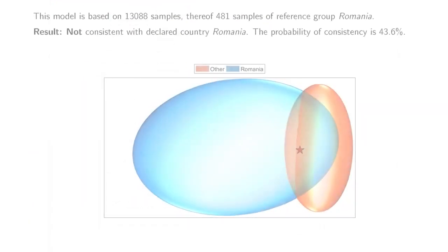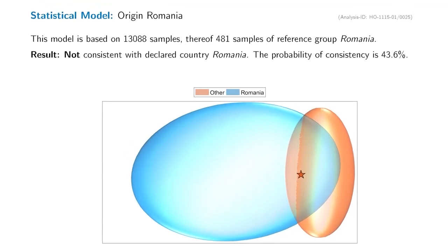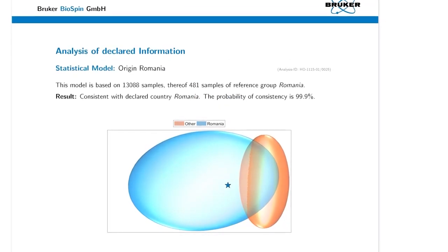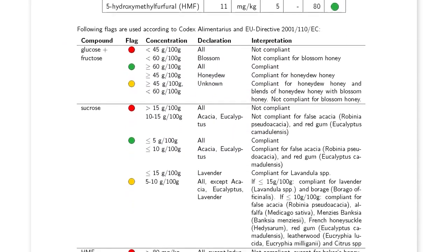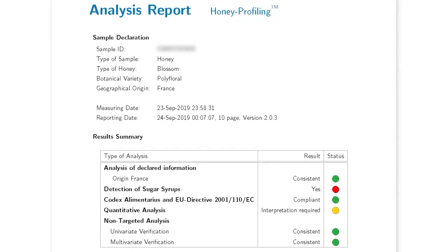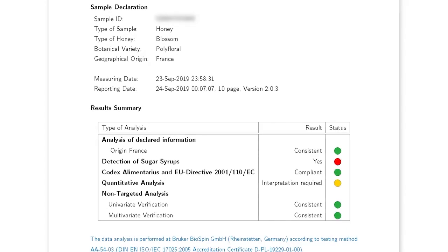The report combines quantitative and statistical analysis results, indicating if the honey sample is compliant to the declared geographical origin and floral source, if it is typical to the reference honeys in the database, and if it contains sugar syrups.